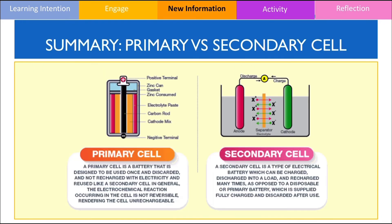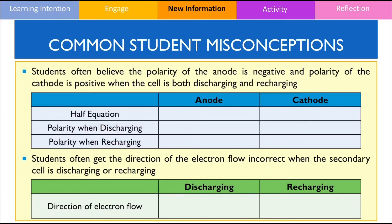The next slide summarises the differences between primary cells and secondary cells. Because this is a content-heavy topic, there are many misconceptions students often have. Firstly, students often believe that the polarity of the anode is always negative and the polarity of the cathode is always positive when the cell is both discharging and recharging — this is incorrect. The site of oxidation always occurs at the anode, so we can write the general half equation for oxidation where it loses electrons, whereas the cathode is the site of reduction where it gains electrons. The polarity of the anode when discharging is negative, whereas the cathode is positive, and this is reversed when recharging.